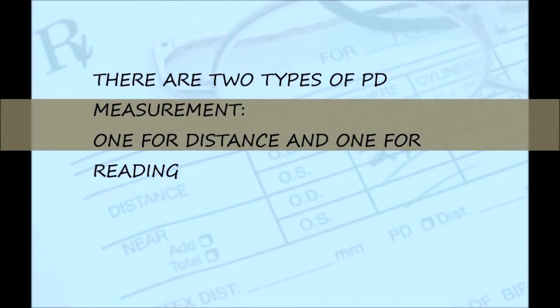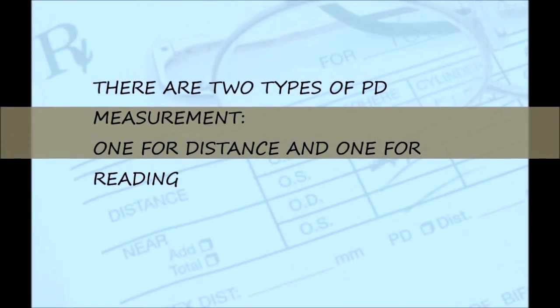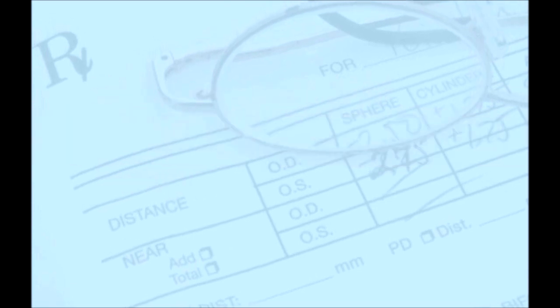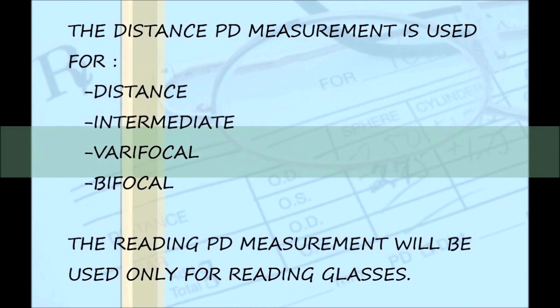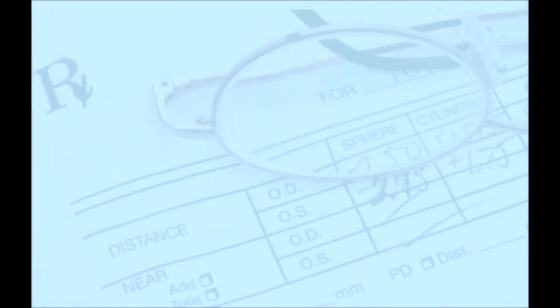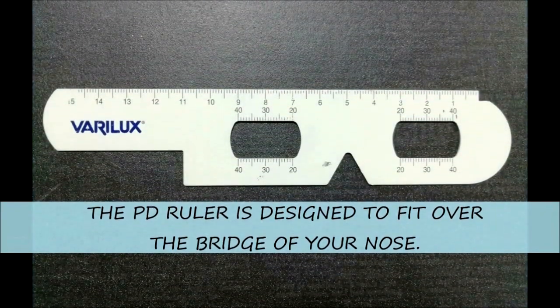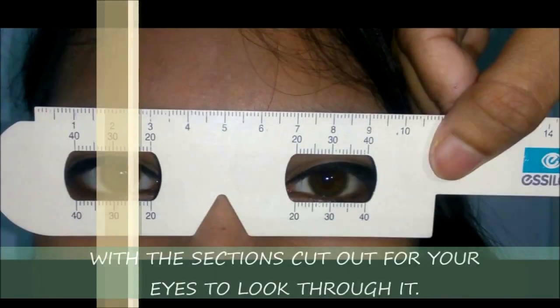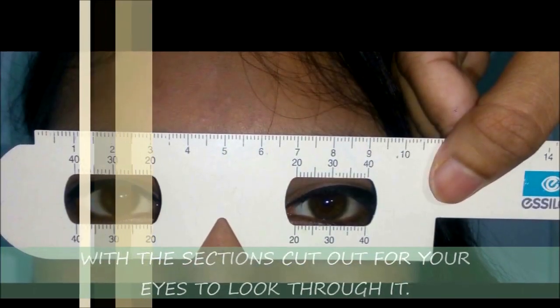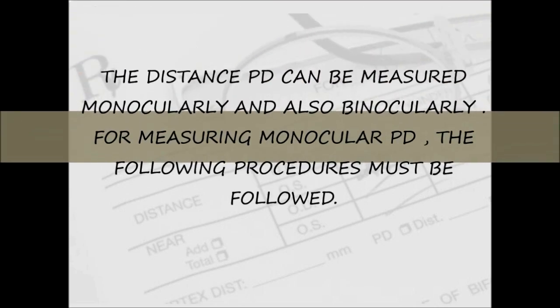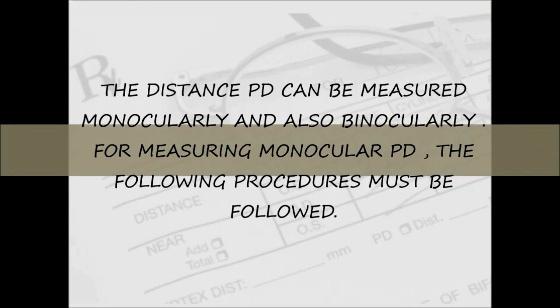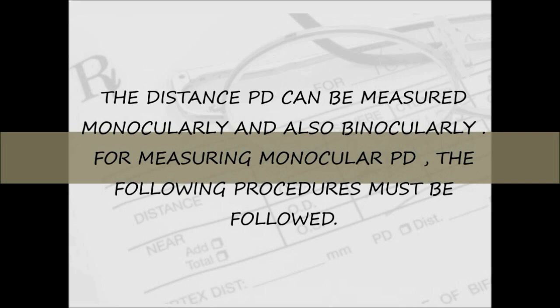There are two types of PD measurement: one for distance and one for reading. The distance PD measurement is used for distance, intermediate, multifocal, or bifocal glasses. The PD ruler is designed to fit over the bridge of your nose, with a section cut out for your eyes to look through. The distance PD can be measured monocularly and binocularly.